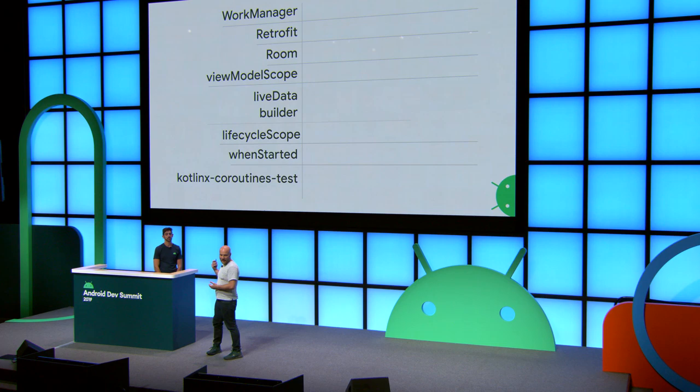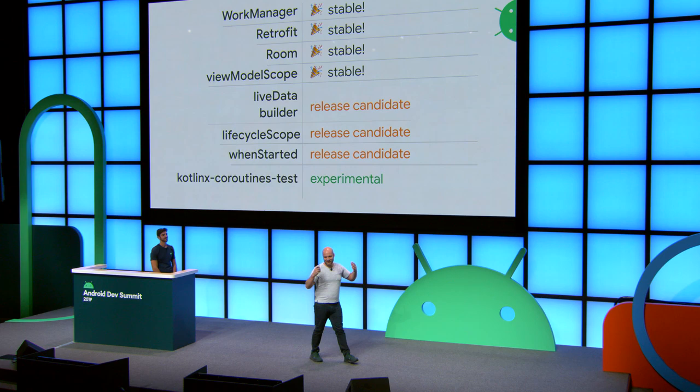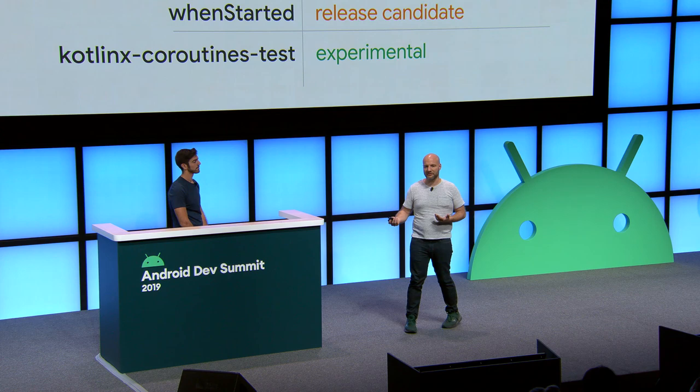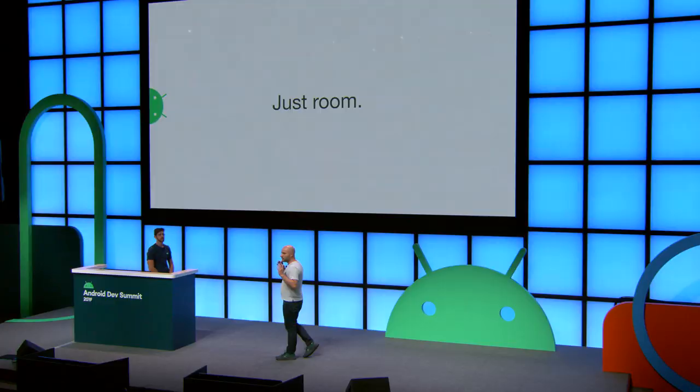At I/O we talked about a bunch of different libraries we are working on. Since then, four of them have made it to stable. You can use WorkManager, Retrofit, Room, and ViewModel scope — these all support coroutines out of the box in a stable version. The LiveData builder, lifecycle scope, and whenStarted are all still in release candidate state on the train to stable. And kotlinx-coroutines-test, the library we are going to be talking about today, is still experimental and is also on the train to stable.